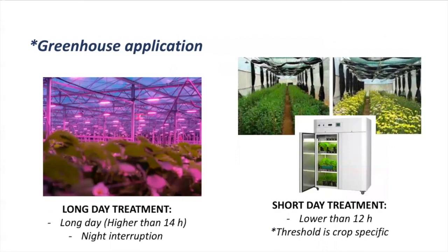Now moving to the greenhouse. As previously mentioned, lamps can be used in greenhouses to promote flowering. Regular high-intensity greenhouse lamps can also be used to promote flowering, increasing DLI, which can be good for different crops, while also inducing a photoperiodic response. If you are only looking to induce a photoperiodic response in a long day plant, you can use a flowering lamp or night interruption. For short day plants, we typically use covers inside the greenhouse to avoid natural light, or move plants to a grow chamber in darkness, to create the specific photoperiod needed.